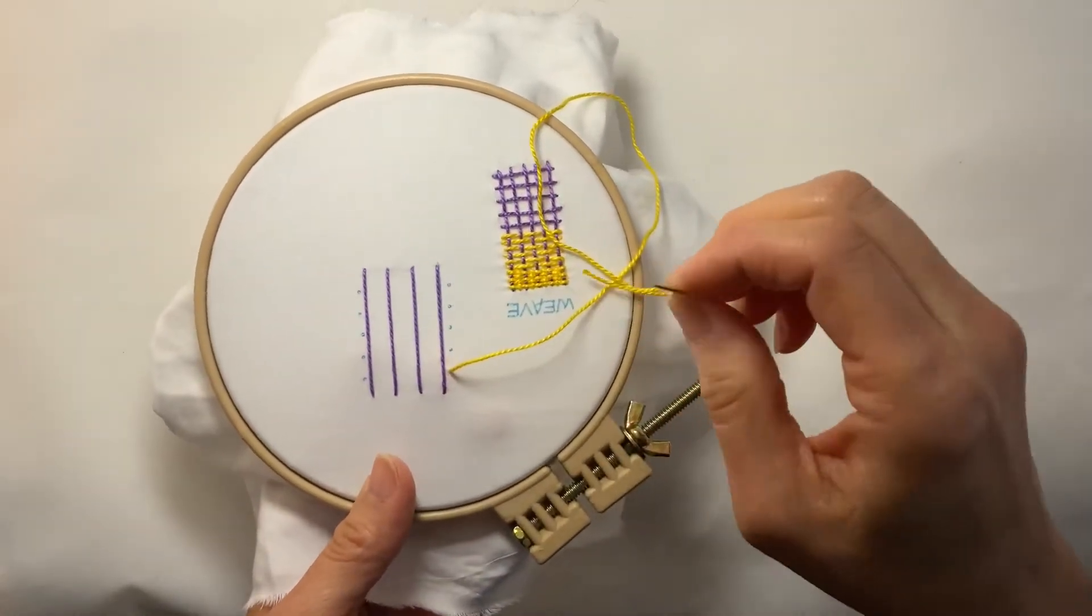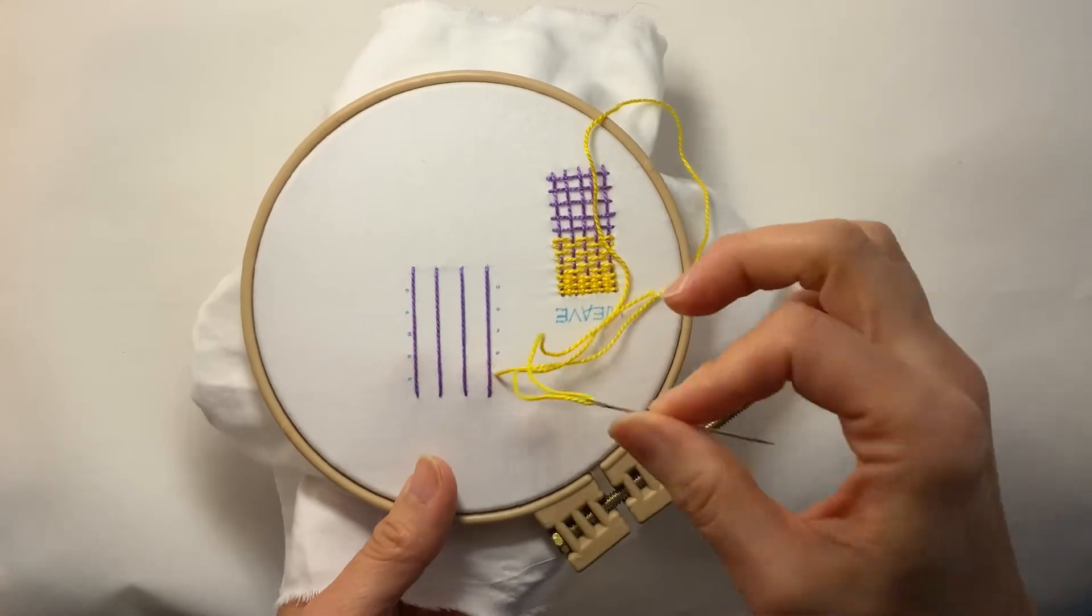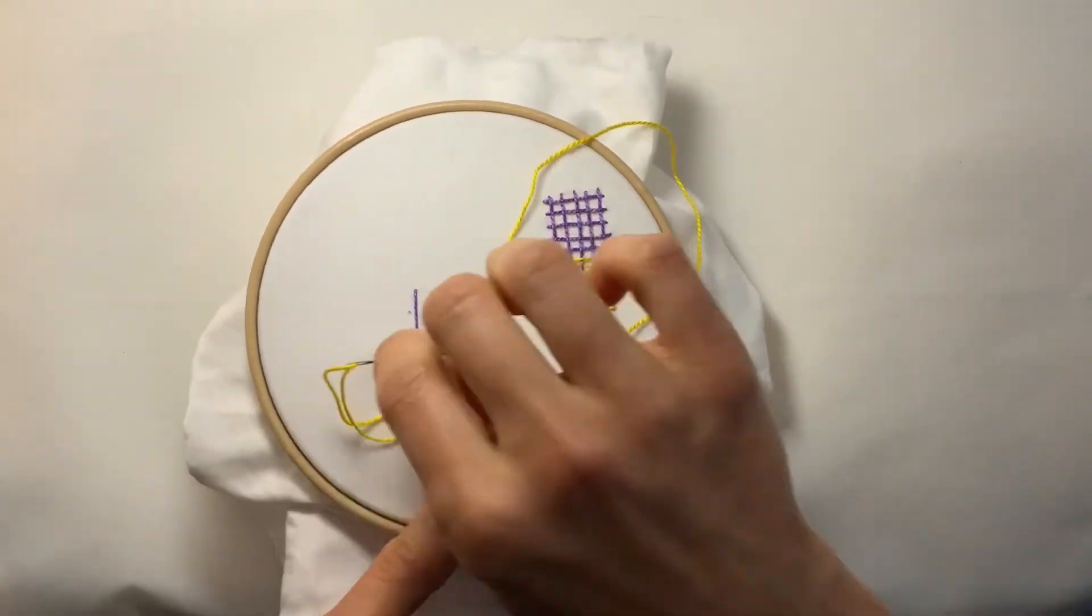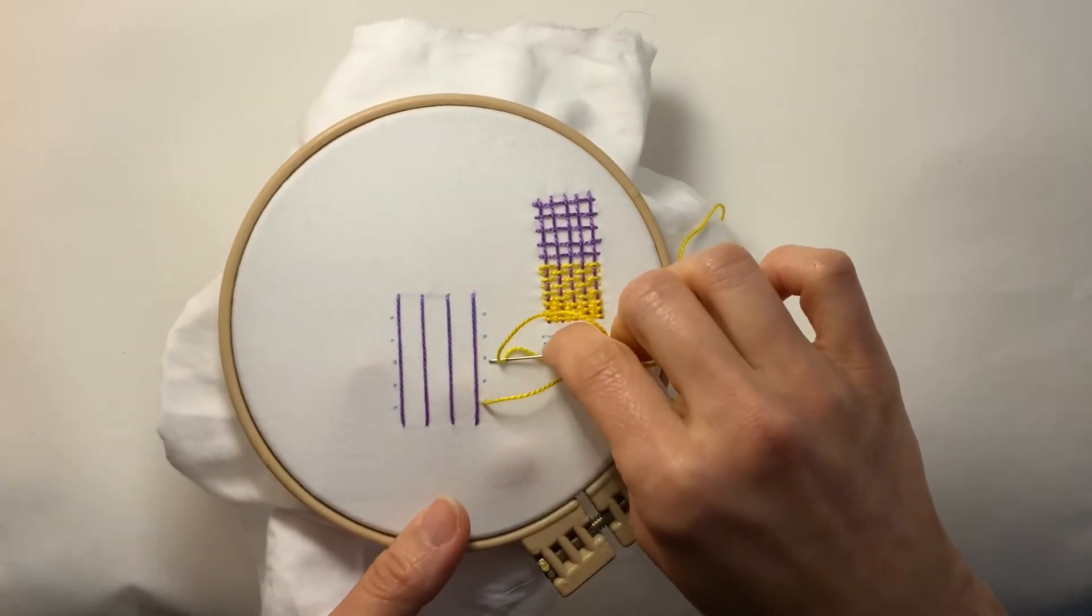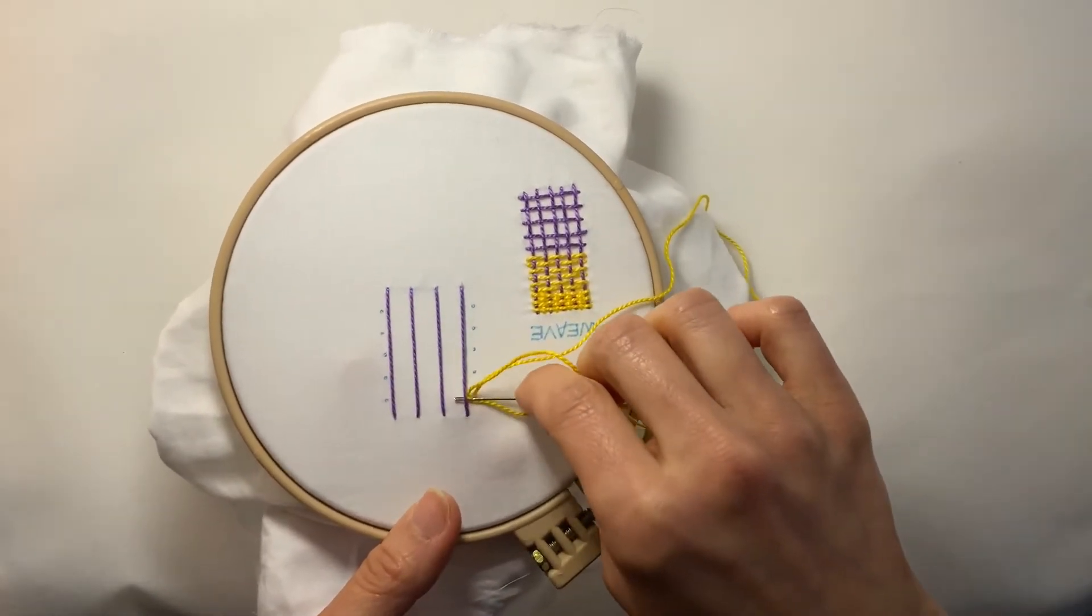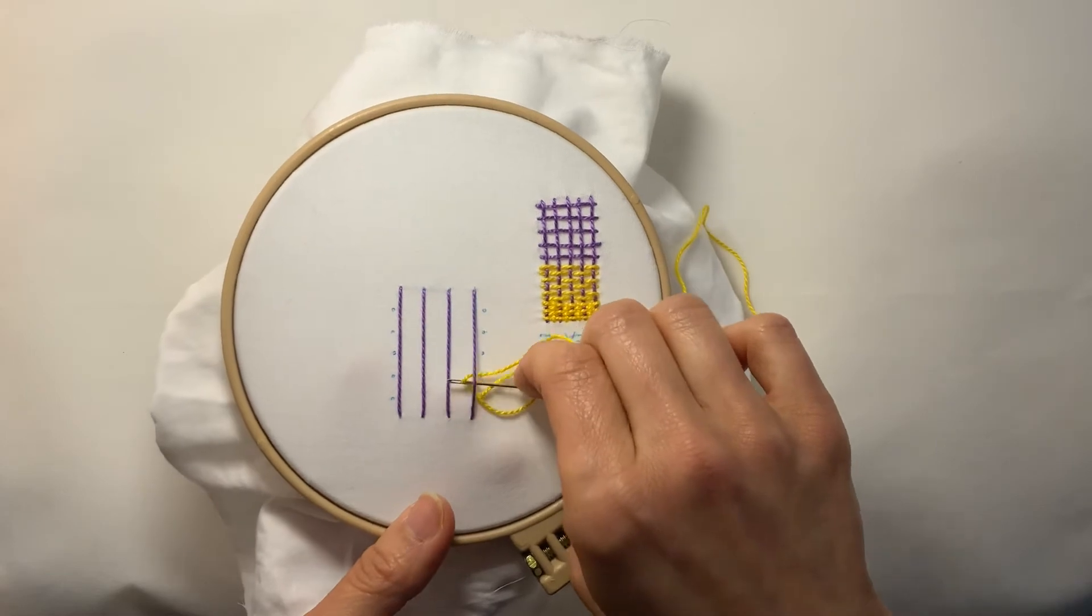And you're just going to basically alternate going under, over, under, over, all the way until you get to the end. So I'm going to turn my needle around because it's a little bit easier to weave with the blunt end, the eye end of the needle.